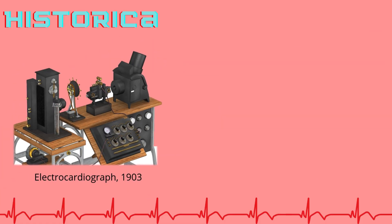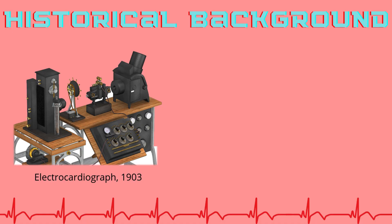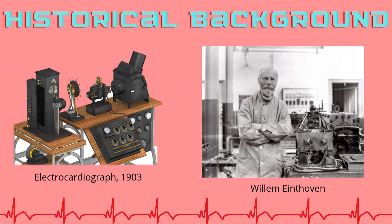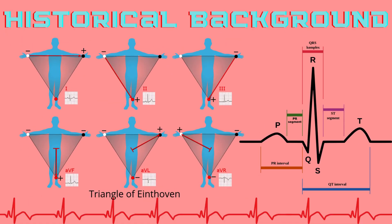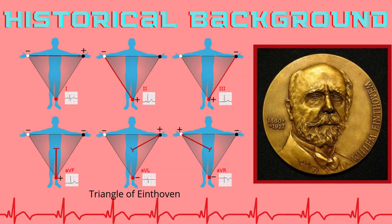The history of the ECG traces back to the late 19th and early 20th century. Willem Eindhoven, a Dutch physiologist, is credited with inventing the first practical ECG machine in 1903. He introduced the concept of limb leads and defined the P, Q, R, S, and T waves like we still use today. For his groundbreaking work, Eindhoven was awarded the Nobel Prize in Physiology or Medicine in 1924.